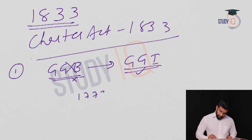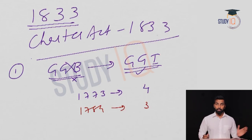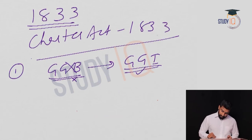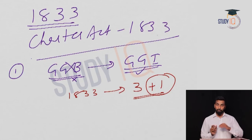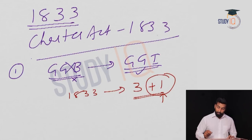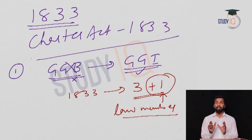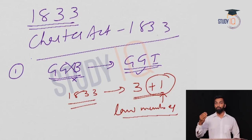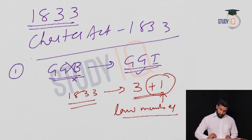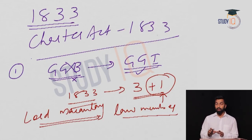The second provision of the 1833 Charter Act: the Executive Council members were increased from three back to four. In 1773 there were four members; in 1784 under Pitt's India Act it was reduced to three; now in 1833 it was increased back to four. The newly added fourth member is known as the Law Member, whose role is to advise the Governor-General in matters of law. The first Law Member was Lord Macaulay, who is important for the Macaulay Minute on education.